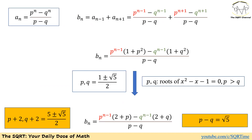To solve this problem, let's start with deriving what we have for Bₙ. Bₙ is defined based on aₙ₋₁ and aₙ₊₁. We have aₙ as P to the power of n minus Q to the power of n, over P minus Q. If we replace what we have for aₙ₋₁ and aₙ₊₁, we end up with P minus Q as a common denominator for these two fractions. Simplifying, we get P to the power of n minus 1 times (1 plus P squared) minus Q to the power of n minus 1 times (1 plus Q squared), over P minus Q.